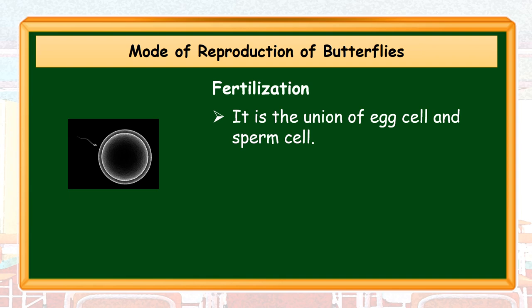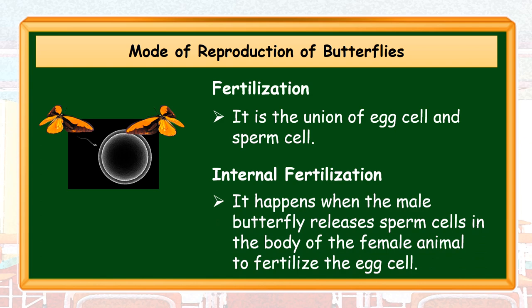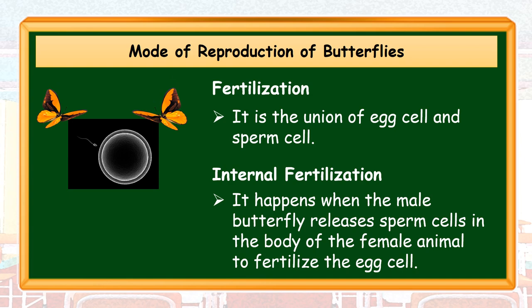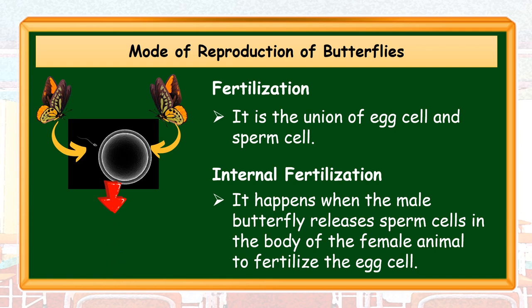Fertilization is the union of egg cell and sperm cell. For the case of butterflies, internal fertilization takes place. It happens when the male butterfly releases sperm cells in the body of the female animal to fertilize the egg cell.